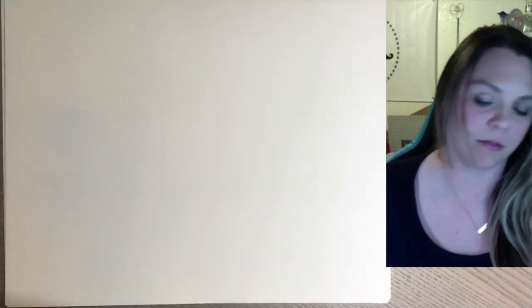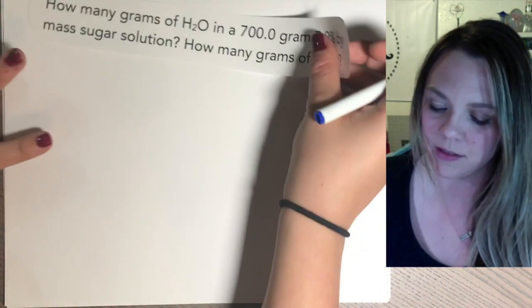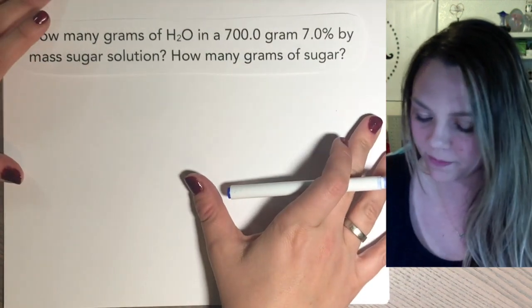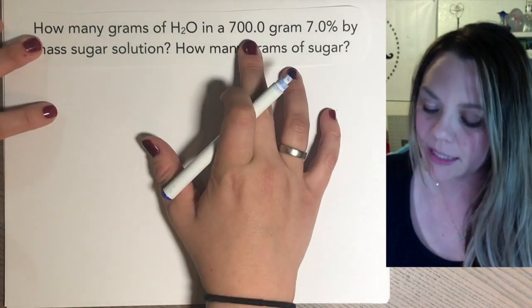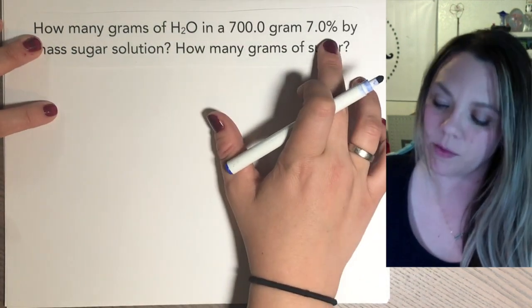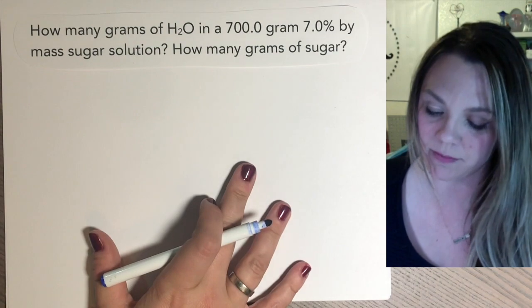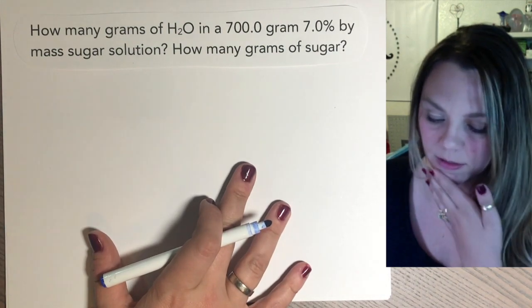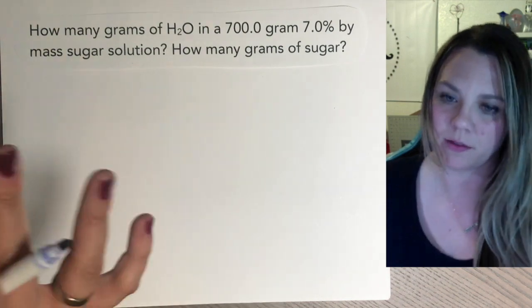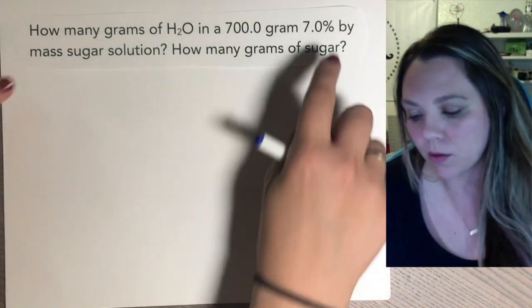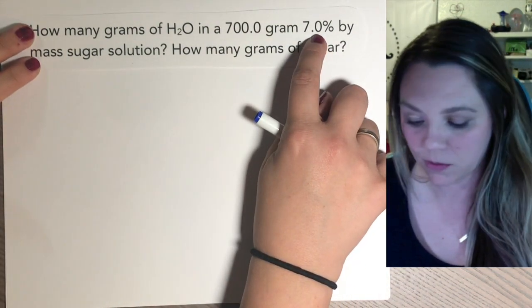Hardest type of mass percent problems. We'll be something like this. So how many grams of water in a 700 gram, seven percent by mass sugar solution? How many grams are actually of water in this thing and how many grams are sugar of this thing? So you kind of work backwards because they gave you the mass percent to begin with.